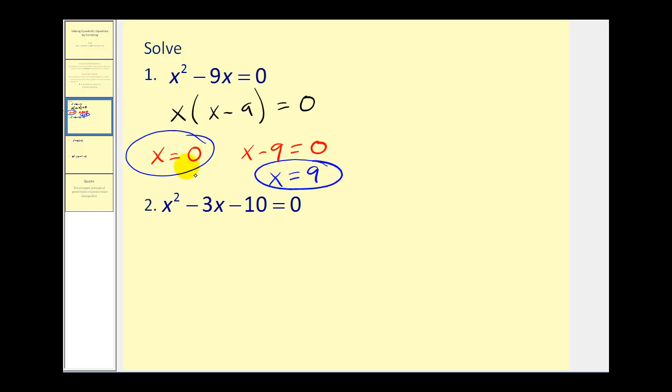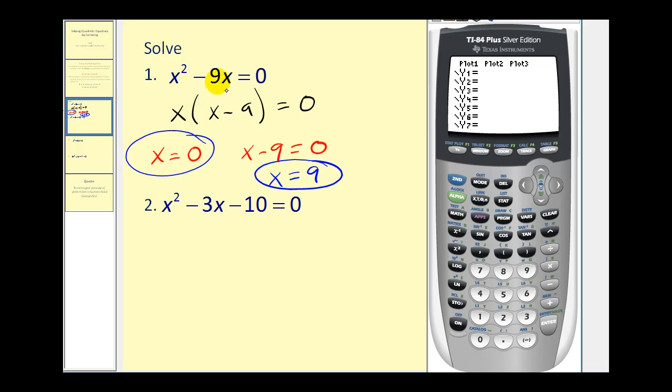Now we also want to take a graphical approach to checking these solutions. Let's go ahead and get our graphing calculator out, and we're going to type x squared minus nine x into y one. And to make sure we have the standard window, let's go ahead and press zoom six.